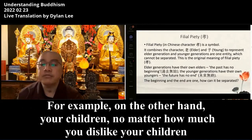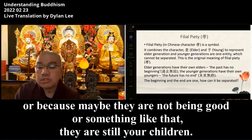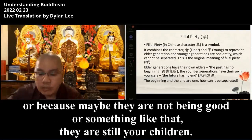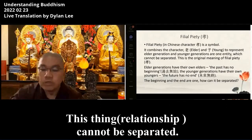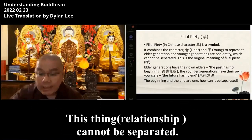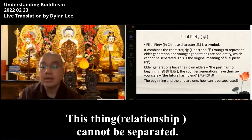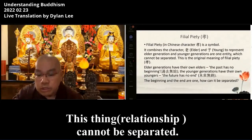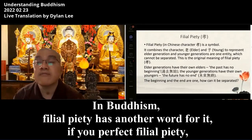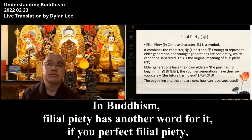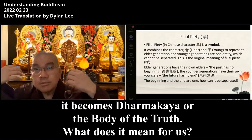On the other hand, your children — no matter how much you dislike your children, or because maybe they are not being good — they are still your children. This thing cannot be separated. In Buddhism, Filial Piety — we have other words for it. If you perfect the Filial Piety, it becomes Dharmakaya, or the body of truth.